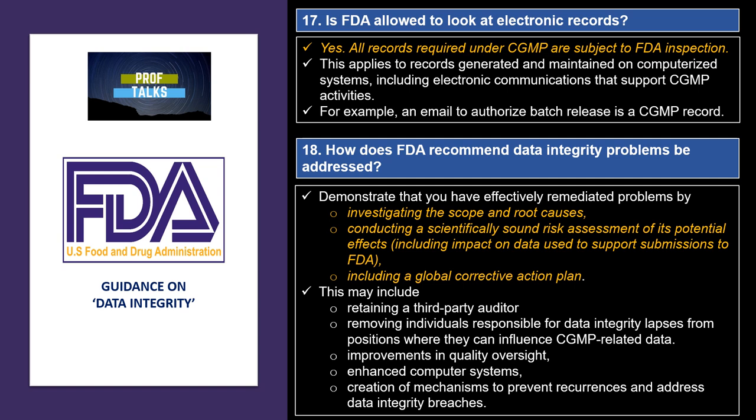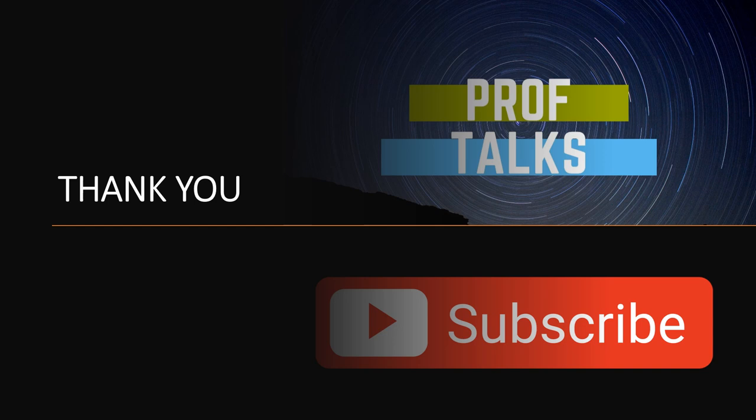A global corrective action plan refers to actions taken across the entire organization. For example, if an organization has multiple manufacturing locations across the globe and a data integrity issue is identified at one location, an impact evaluation of similar occurrences should be carried out at all other locations and necessary preventive actions taken proactively. Such actions may include retaining a third-party auditor, removing individuals responsible for data integrity lapses from positions where they can influence CGMP data, improvements in quality oversight, enhanced computer systems, and creation of mechanisms to prevent recurrences and address data integrity breaches.